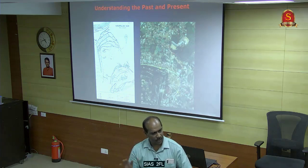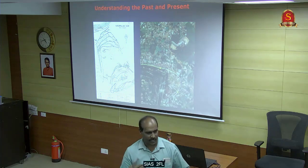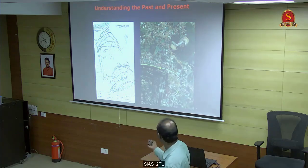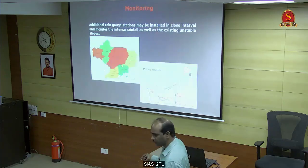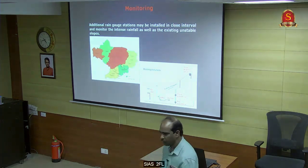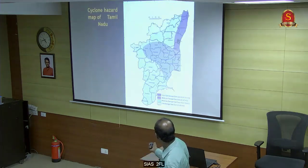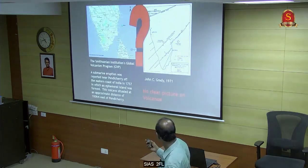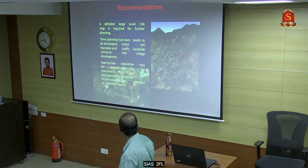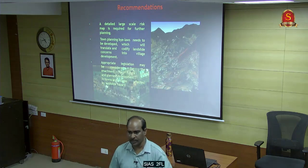First you need to study the area - how it happened before, what is the present condition, and whether this area is going to have another landslide. You need to identify that and do monitoring. You can have a rain gauge station battery, geophones, and pore water pressure sensors. If you monitor the slope, you can do an early warning system.